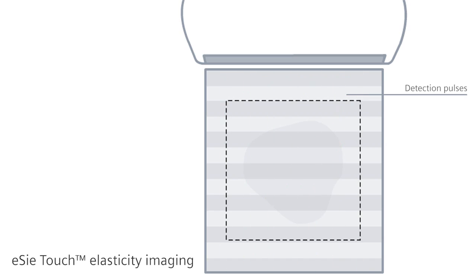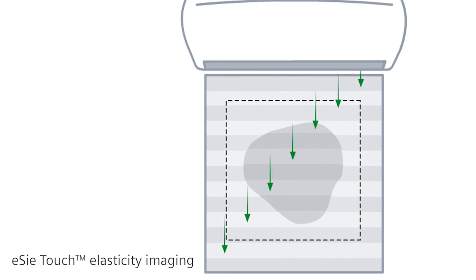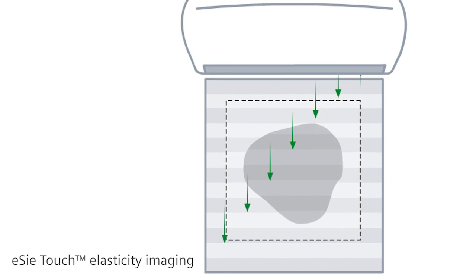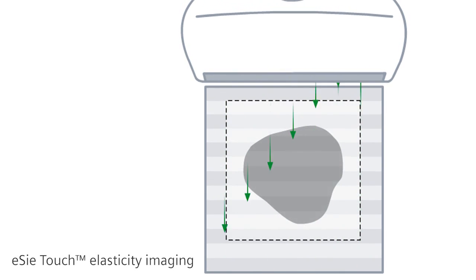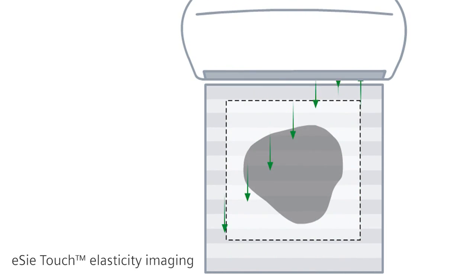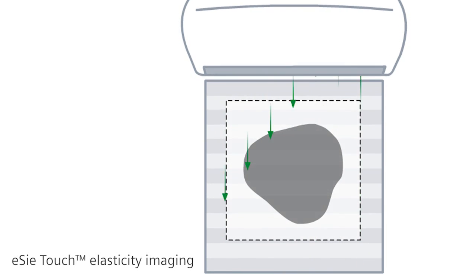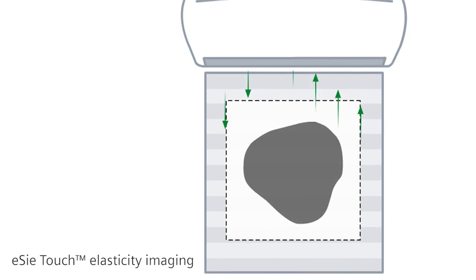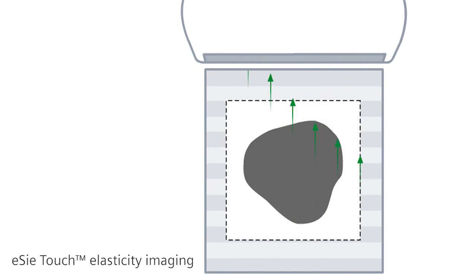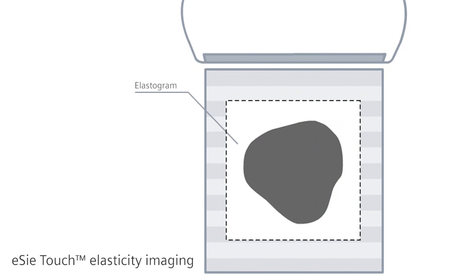Generally we are differentiating three different kinds of elastography. The first being the standard compression elastography, where you manually compress the tissue using a transducer. The stiffness of the tissue is being coded in different colors or in black and white.